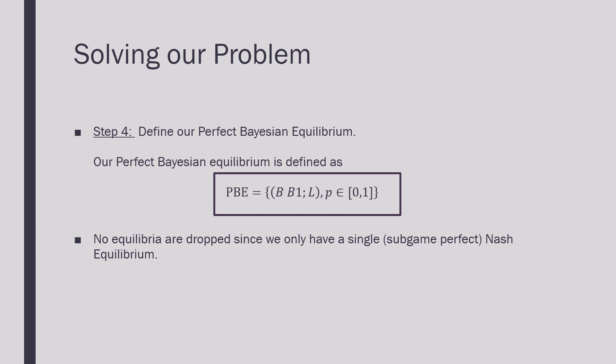Lastly we're going to define our Perfect Bayesian Equilibrium. Our Perfect Bayesian Equilibrium is where player one is playing B B1 and player two is playing L, and this is supported by any belief. No equilibrium has been dropped since we only have a single subgame perfect Nash equilibrium.